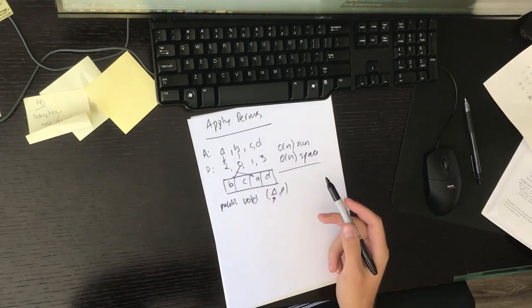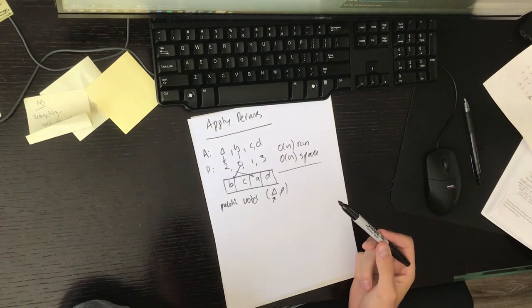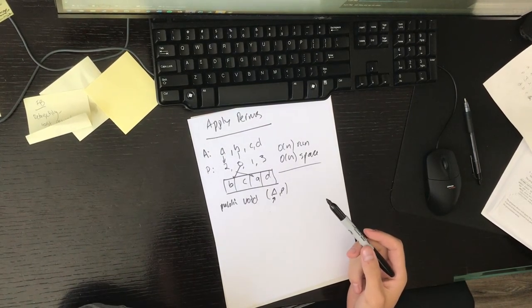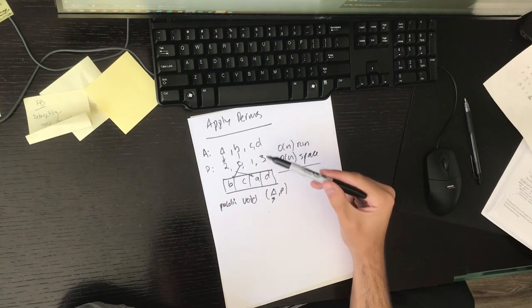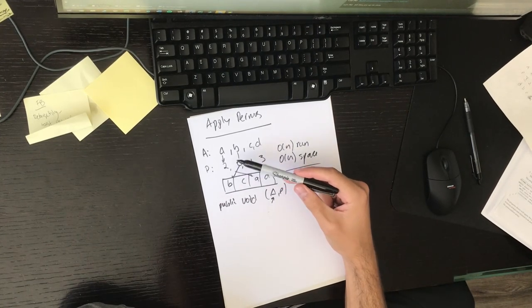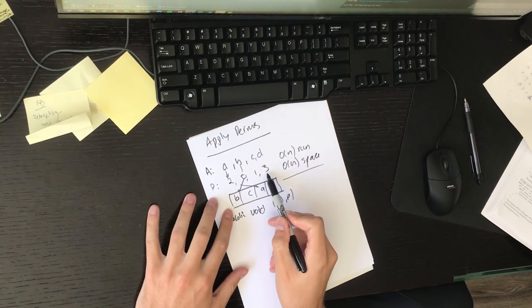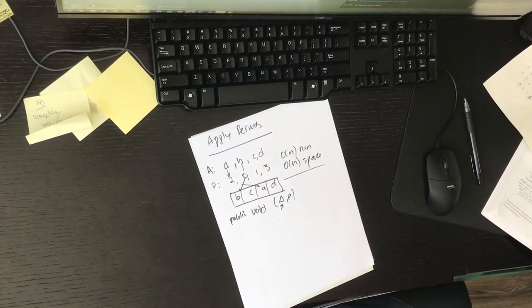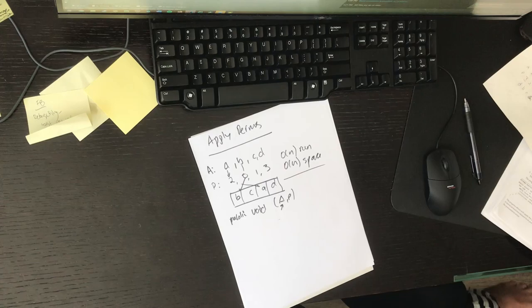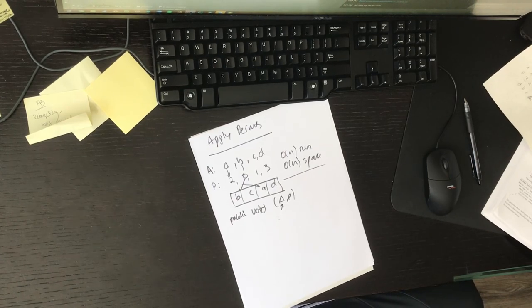So that's the brute force solution, but we can do better. Looking at this, one way might be to maybe sort this and every time you sort something, you could probably get it down to N log N time. But let's try and do it in just O of N, with no extra space.